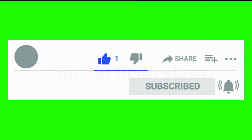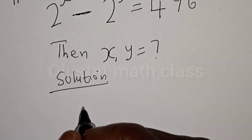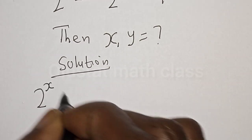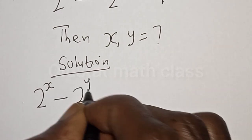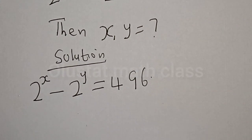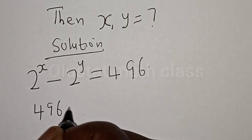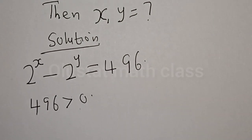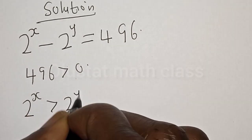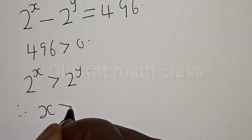Solution. We have the given equation: 2 raised to power x minus 2 raised to power y is equal to 496. From this equation, 496 is greater than 0. Also, 2 raised to power x is greater than 2 raised to power y. Therefore, x is greater than y.